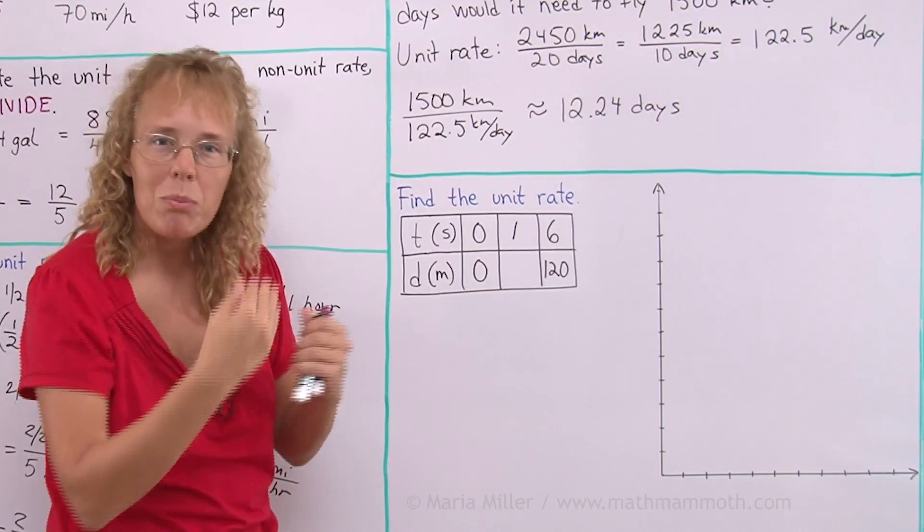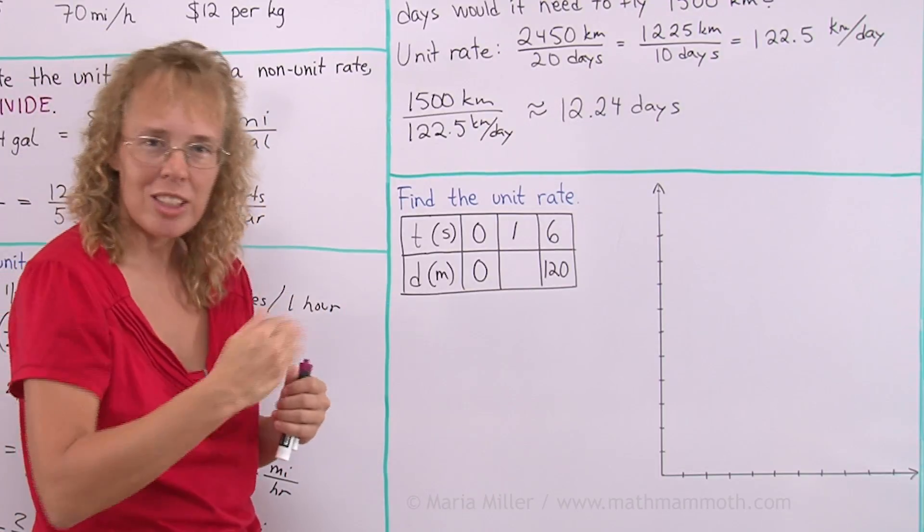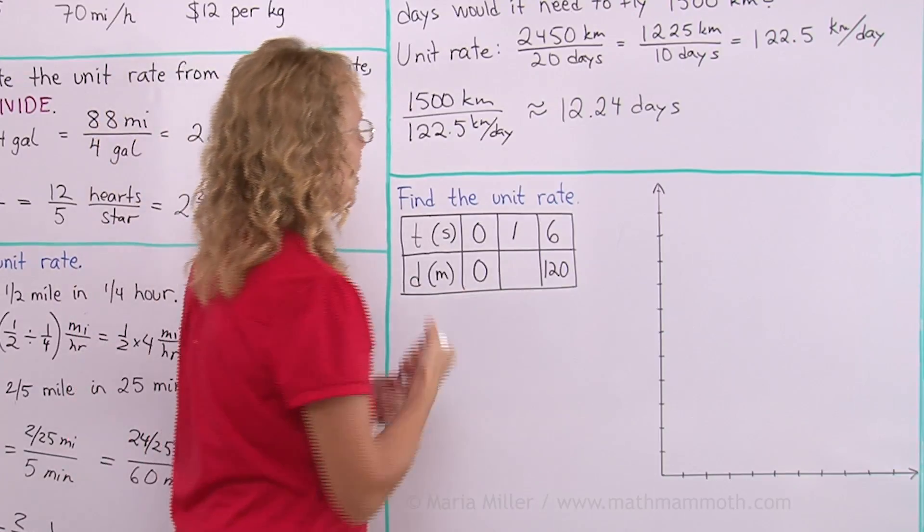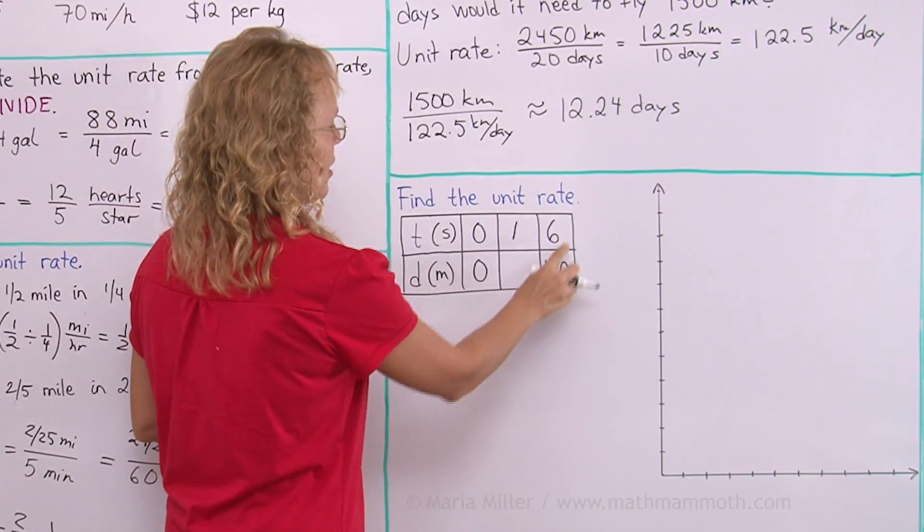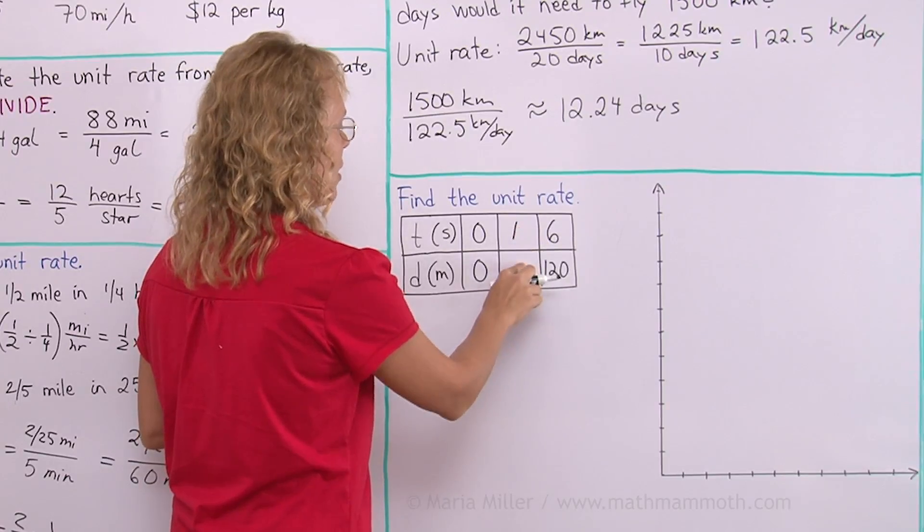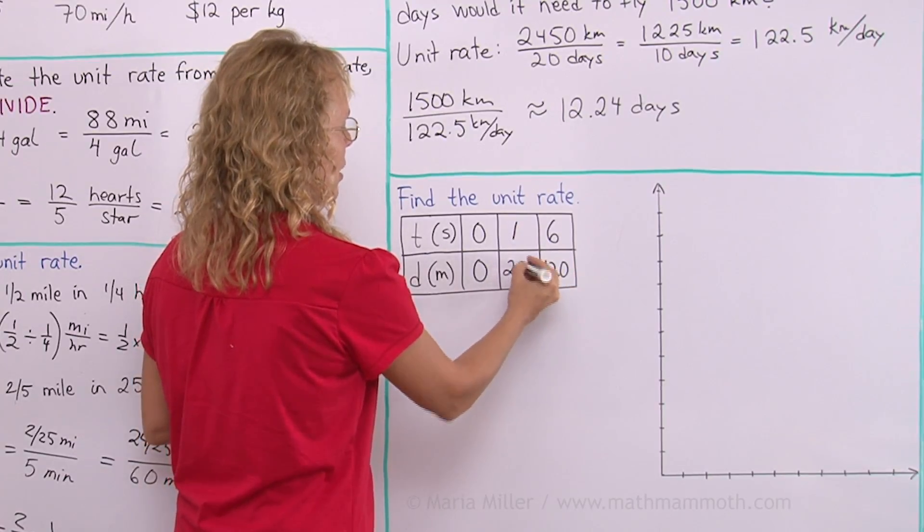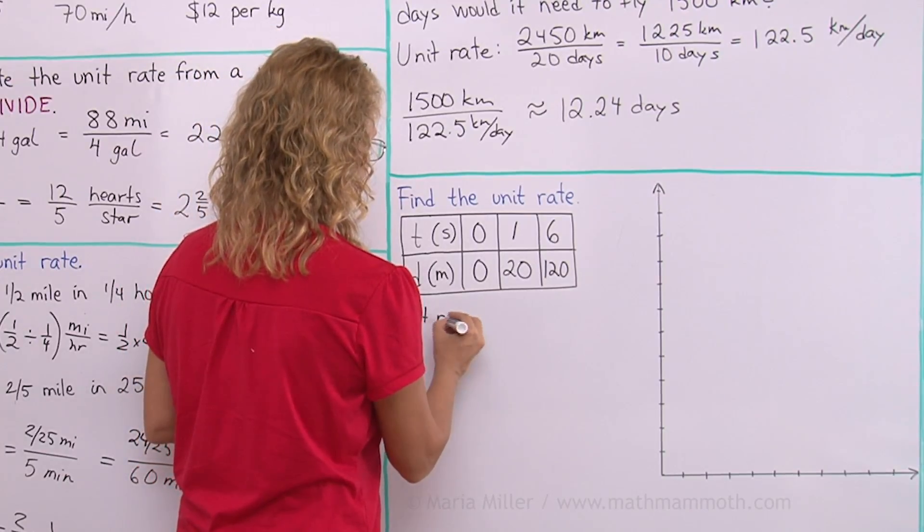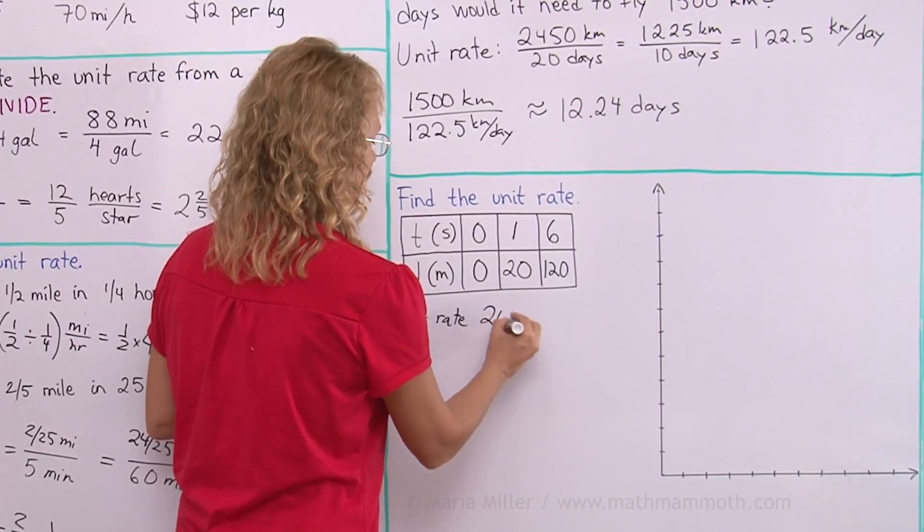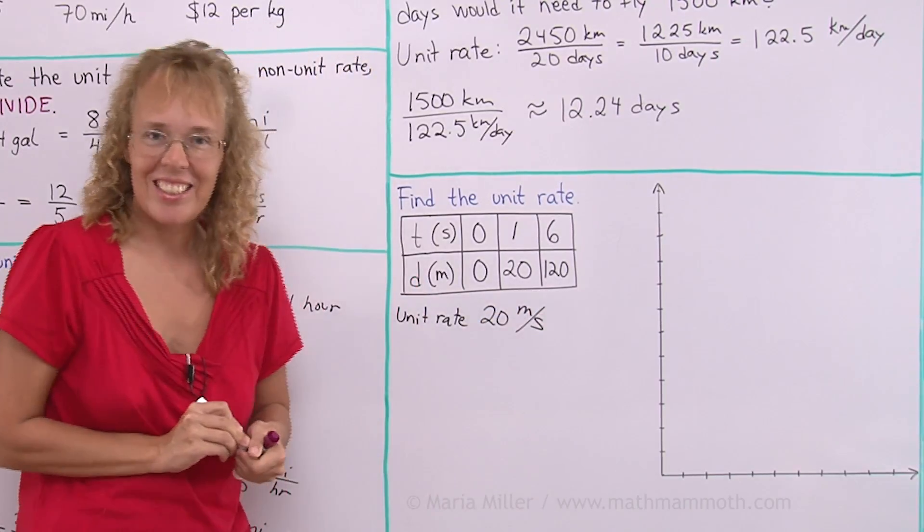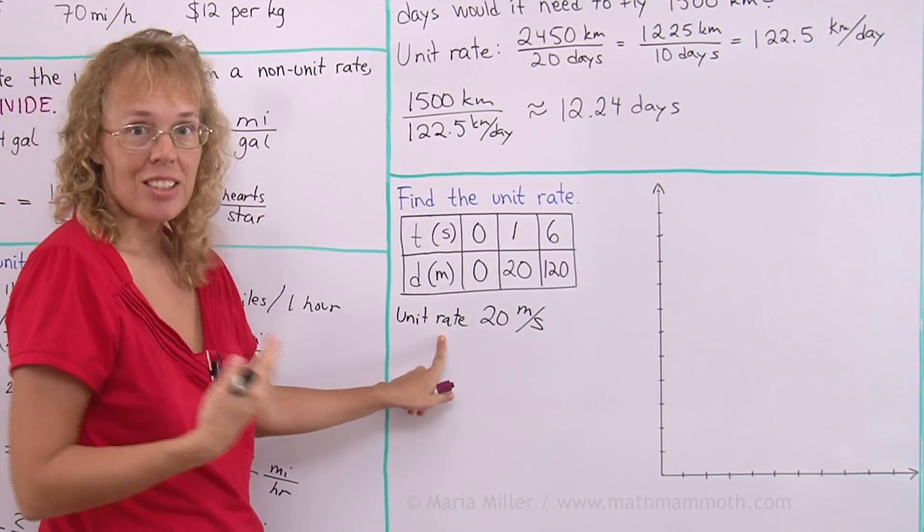It's meters per seconds. So that's why I put one second, not one meter. And of course, you can easily see if in six seconds, 120 meters, then in one second, one sixth of that number or 20 meters. The unit rate is 20 meters per second. It's a speed. Speed is a type of rate.